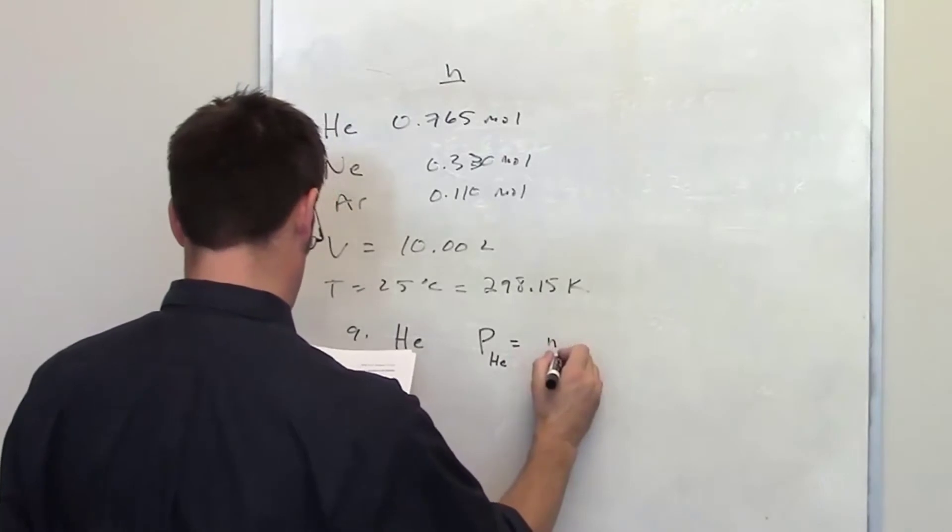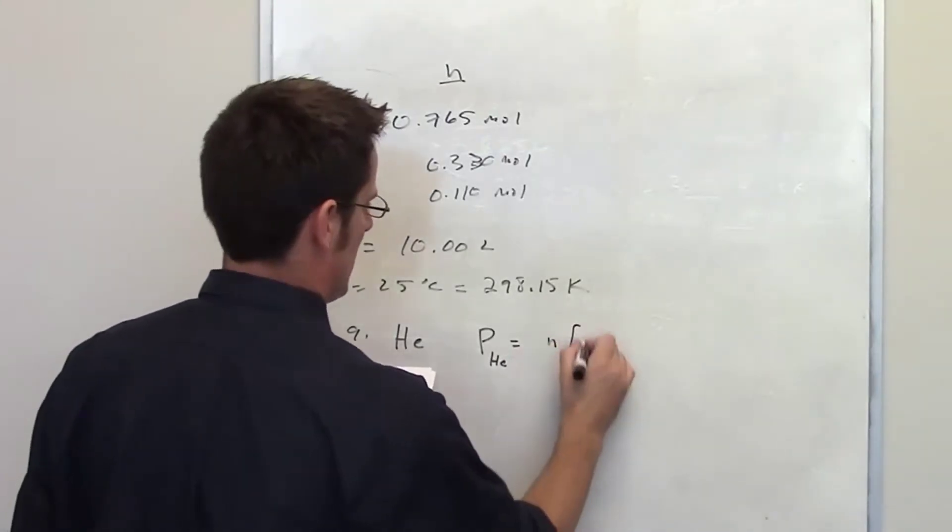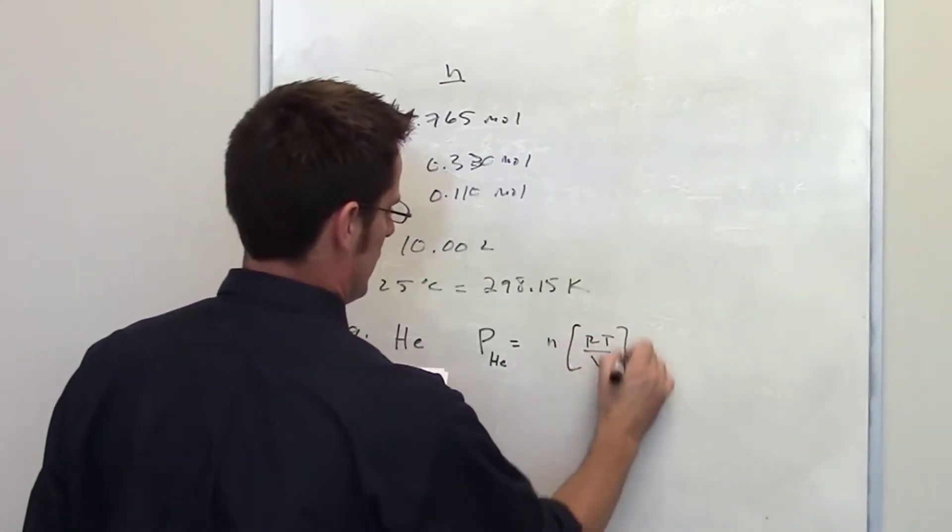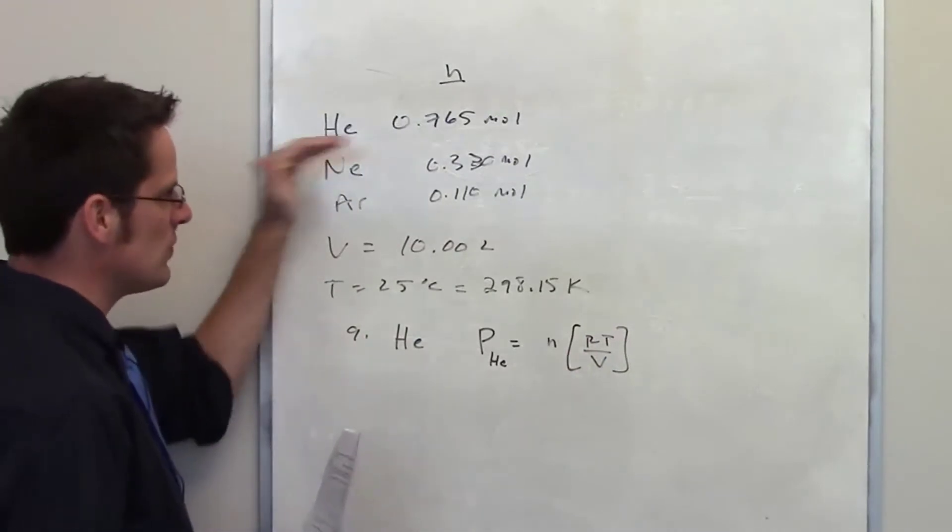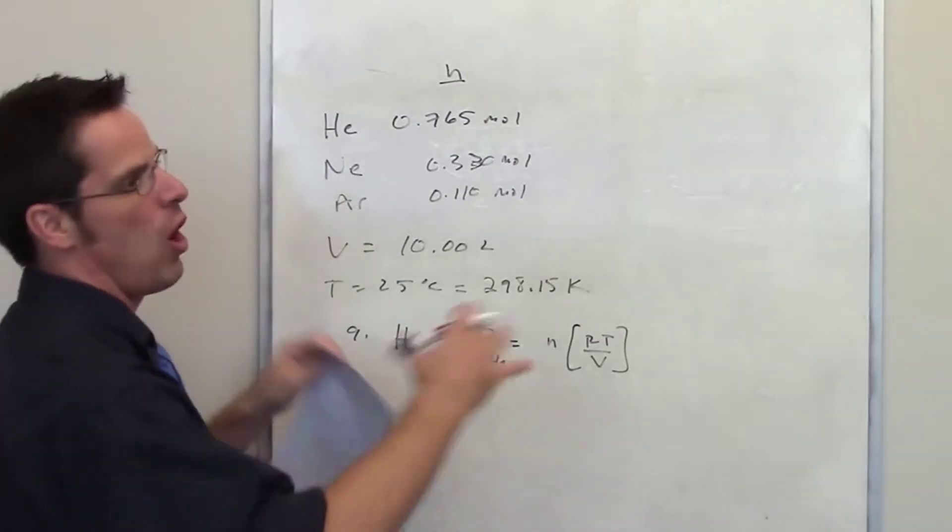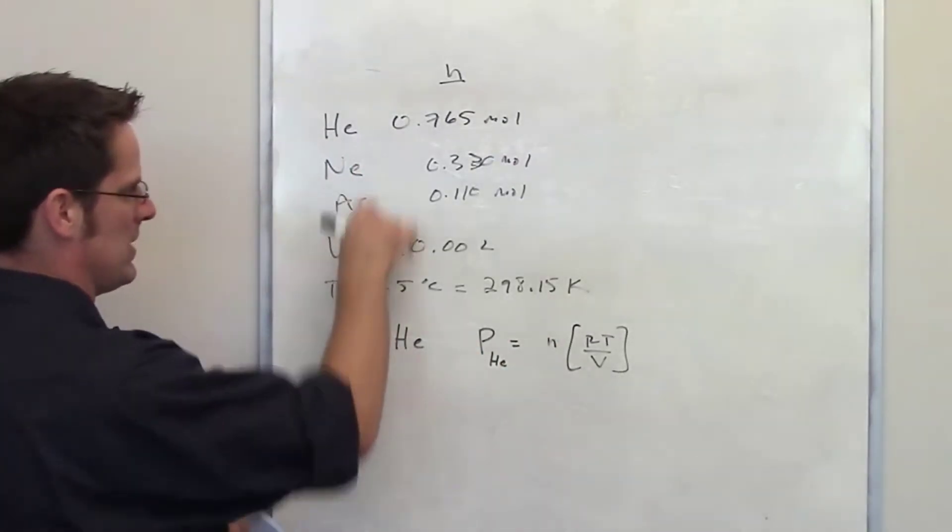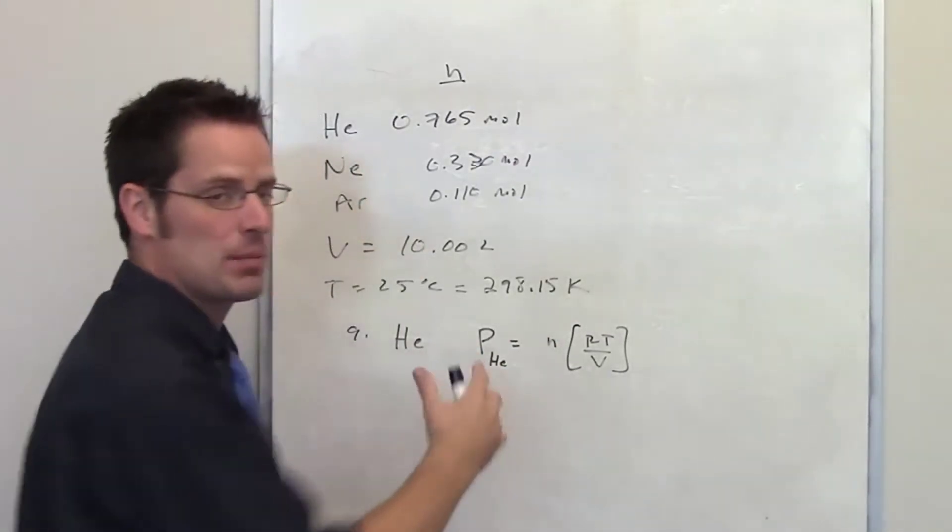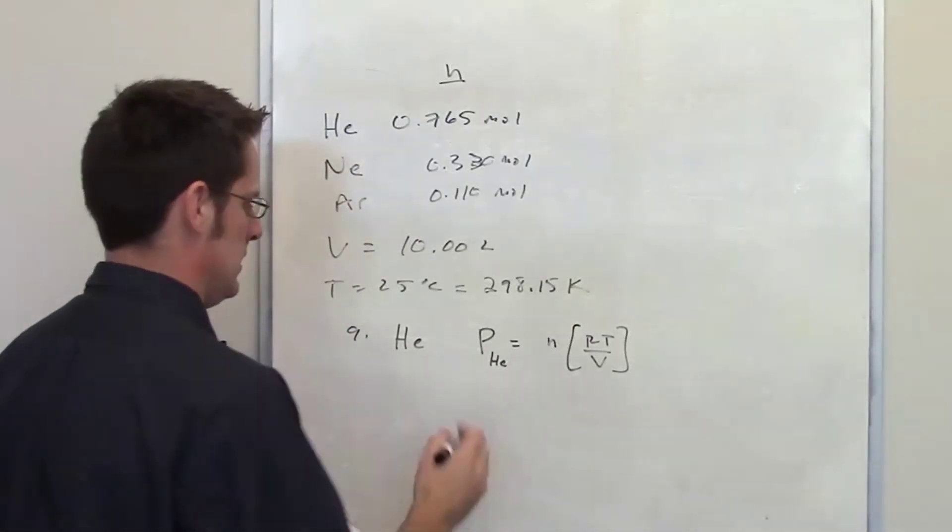In other words, you can treat each of these individual gases separately and get an individual pressure just for that gas. Even though they're all together, you don't have to worry about the other gases somehow changing the pressure of helium. It's all kind of plug and chug kind of stuff.